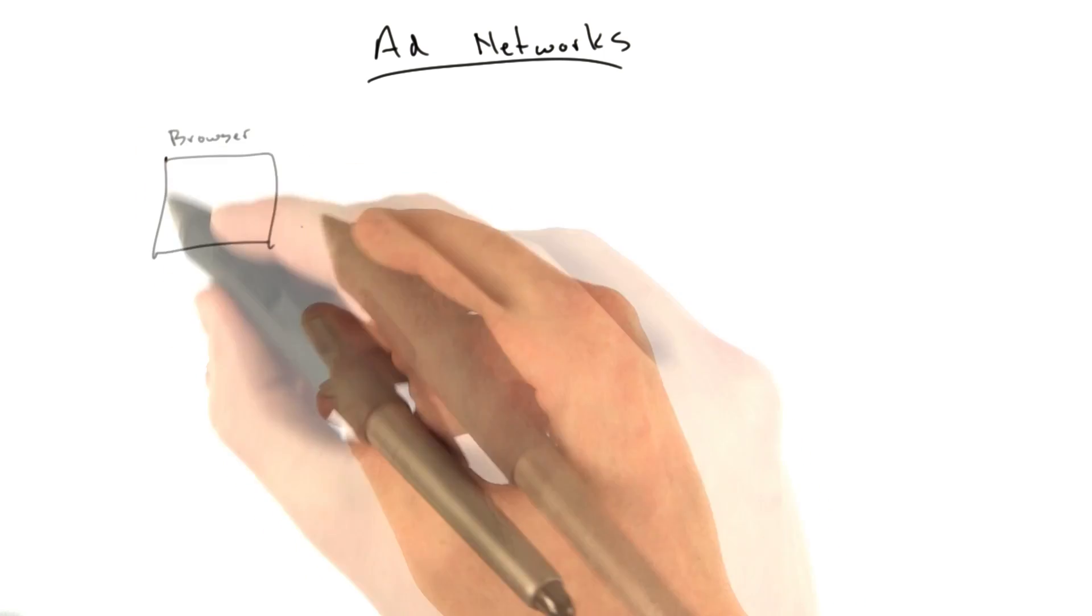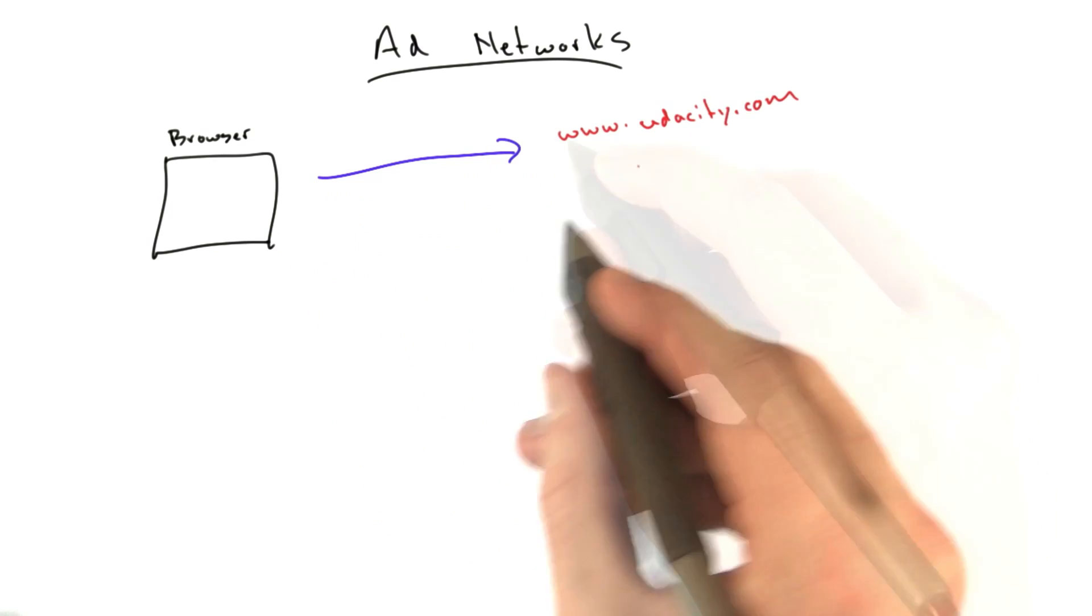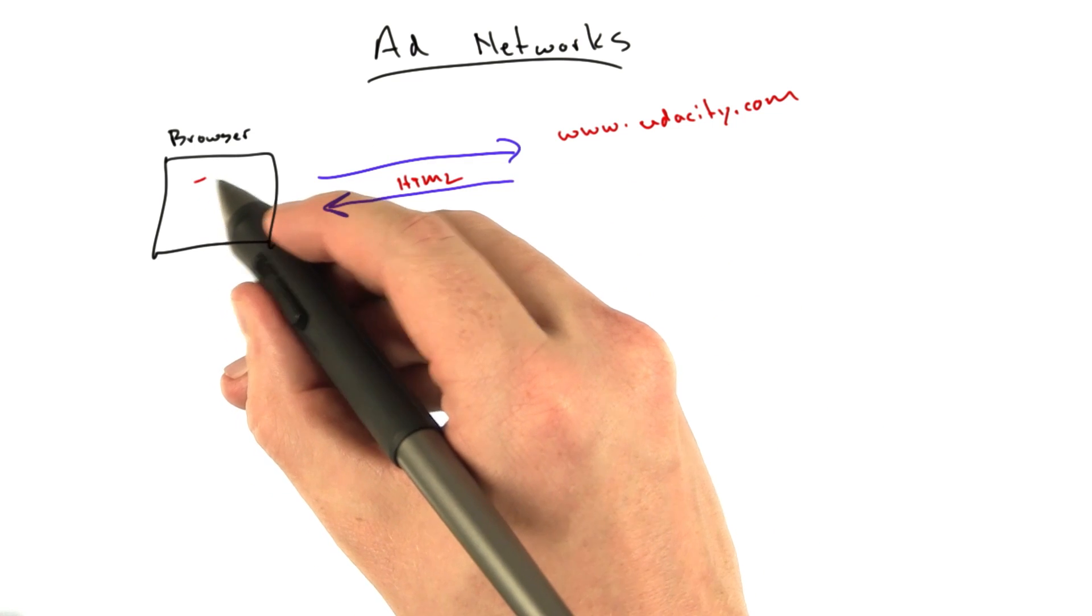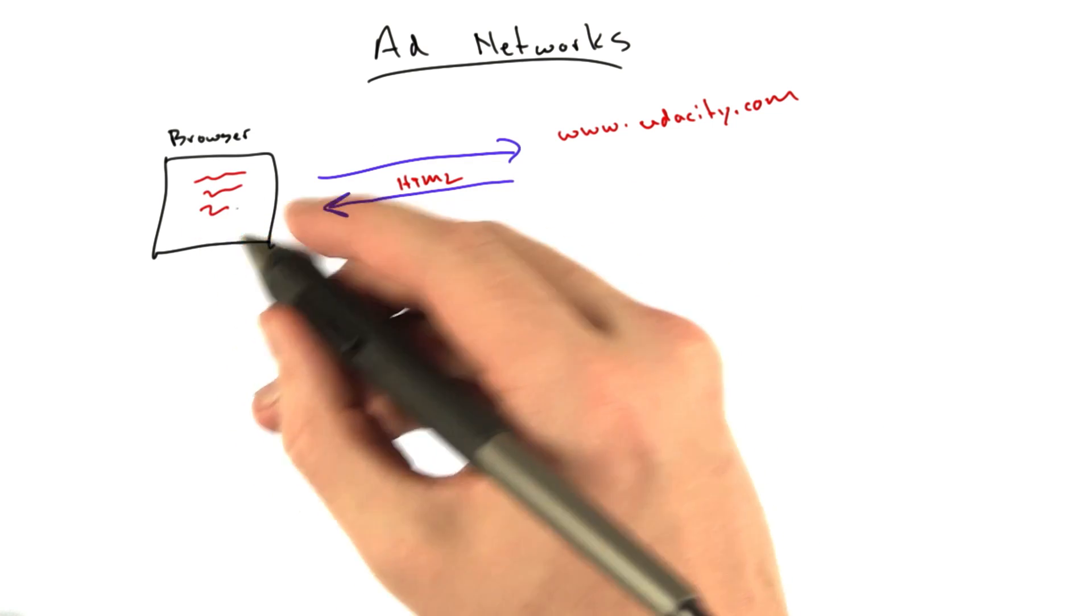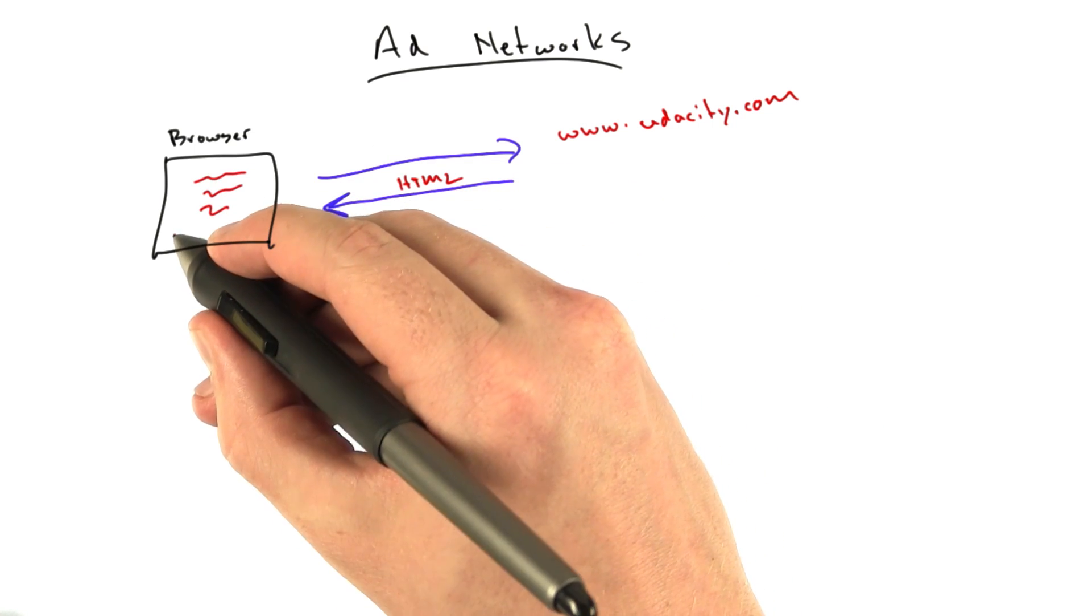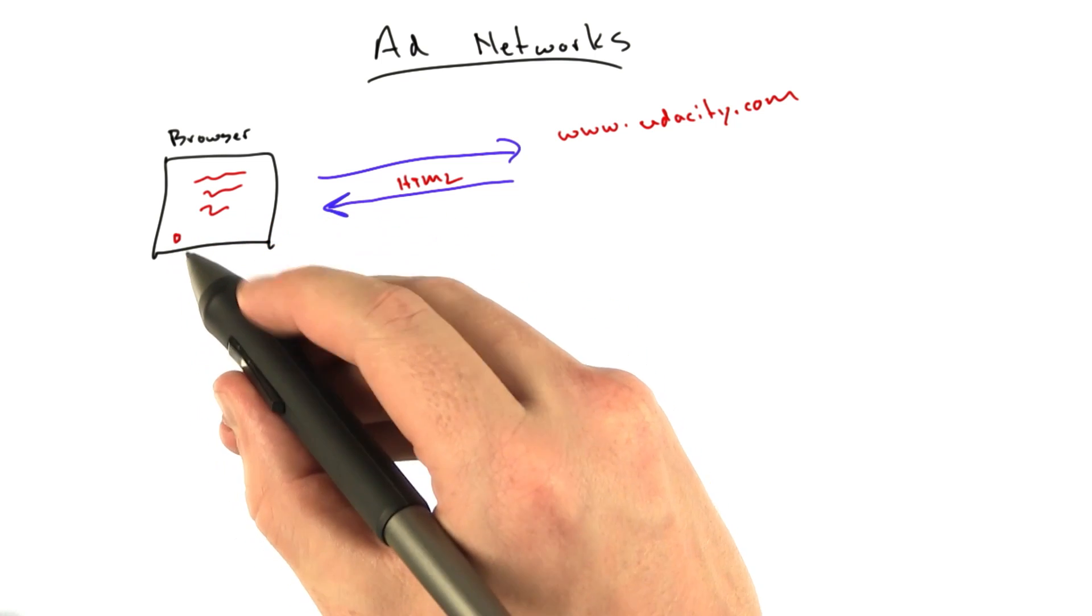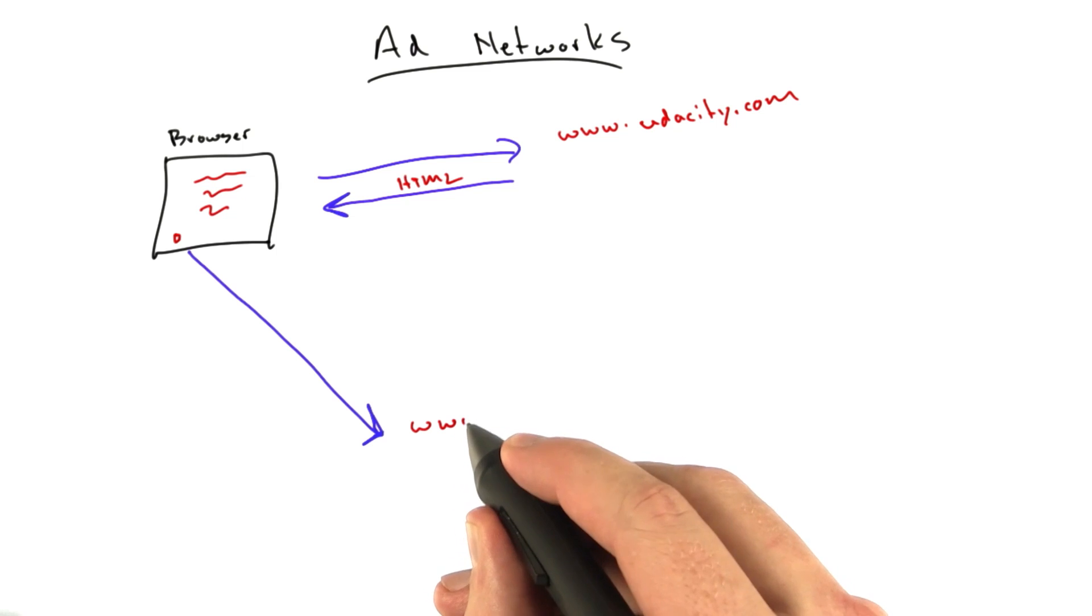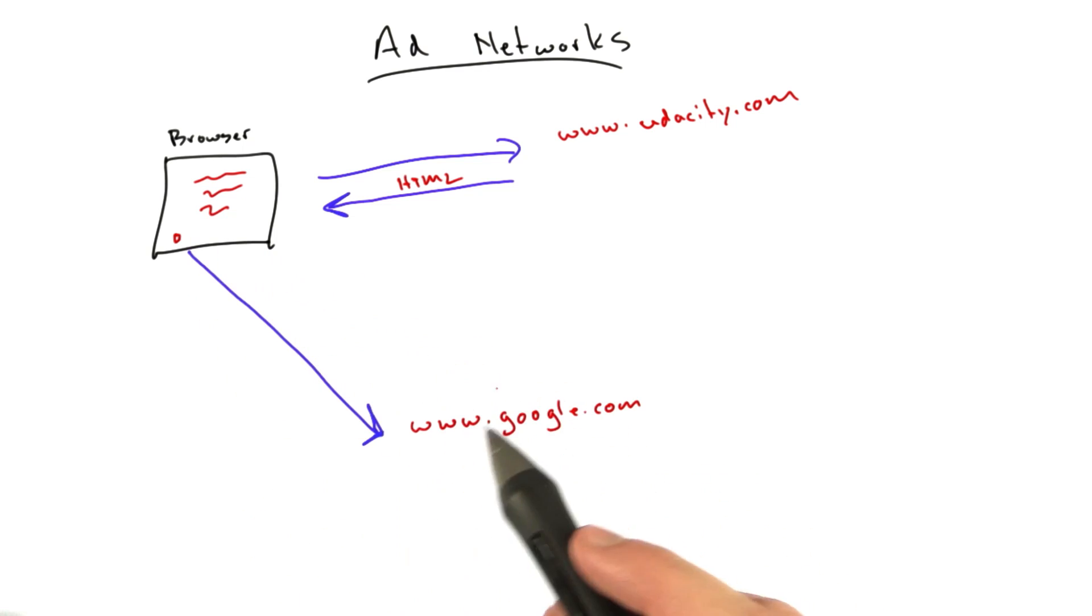So say you have your browser, and it makes a request to some website, and this website responds with some HTML. One of the things in this HTML could actually be a little one pixel hidden image that you don't even see that makes a request to somebody else. For example, google.com. And this, in fact, happens.